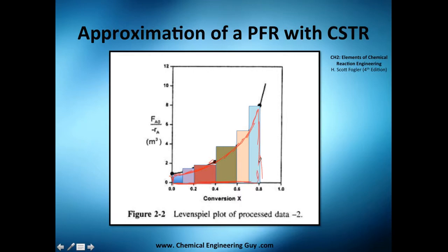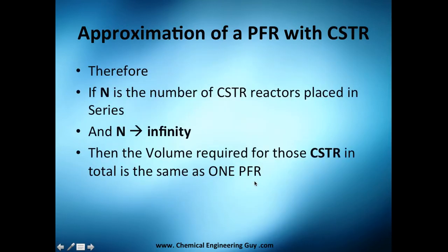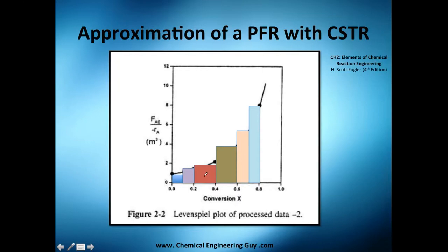As you approximate n equals infinity, you'll have so many reactors that the system will actually behave like a PFR mathematically — though in the lab or plant you'd have a lot of reactors to manage. So as n goes to infinity, the total volume required for those CSTRs equals the volume of one PFR. That's awesome.